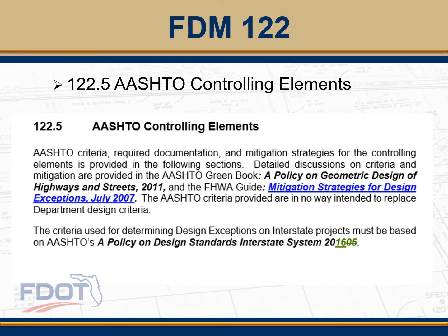A minor update was to include the updated policy on design standards for the interstate system. The AASHTO controlling elements are included in the AASHTO Policy on Geometric Design for Highways and Streets, and the 2011 Green Book is the current document used by the department. There is an additional document that governs the design process for the interstate system. Up until now the 2005 version had been used, but Federal Highway has since adopted the 2016 version, so all design projects should be evaluated by the 2016 manual. This 10- to 12-page manual is very small but has specific geometric requirements that supersede those within the AASHTO Green Book.